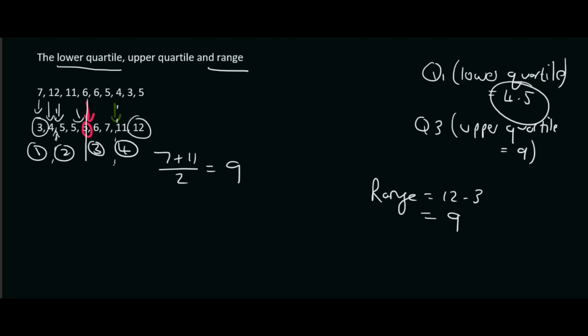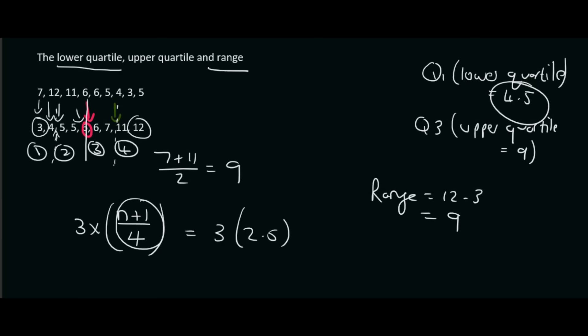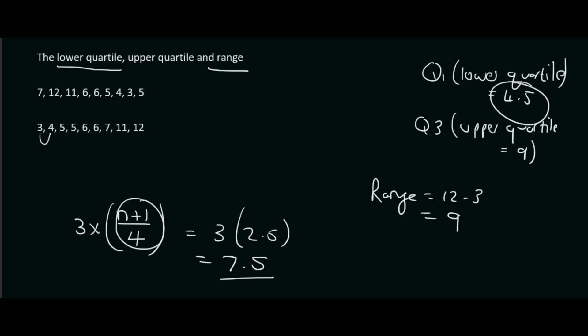Now, how do we find the third quartile? You still use (n+1) over 4, but you multiply that answer by 3 because we're looking for the third quarter. So that's 3 times 2.5, which is 7.5. That is not the answer — you must go to position 7.5. Counting through the positions: 1, 2, 3, 4, 5, 6, 7 — and position 8 would be 11. So 7.5 is exactly in between 7 and 11. Add 7 and 11 together and divide by 2, giving us 9.